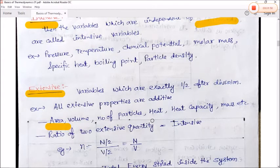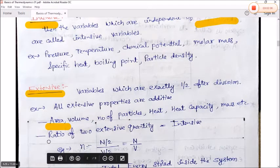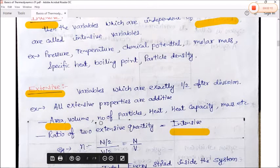Examples of extensive variables include: area, volume, number of particles, heat, heat capacity, mass, etc. The ratio of two extensive quantities is called an intensive variable.